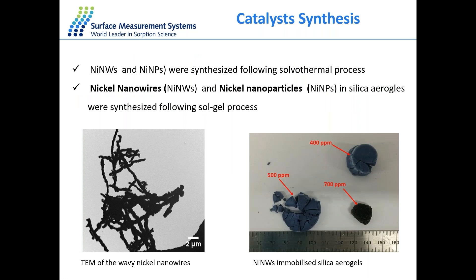The materials employed as catalysts are silica aerogels. Nickel nanowires and nickel nanoparticles were initially synthesized following a thermal process by Chen. Nickel nanowires and nickel nanoparticles on silica aerogels were prepared following the sol-gel process. On the left-hand side, we have the TEM image of nickel nanowires showing a beaded structure. On the right-hand side, we see the silica aerogels and the particle sizes.